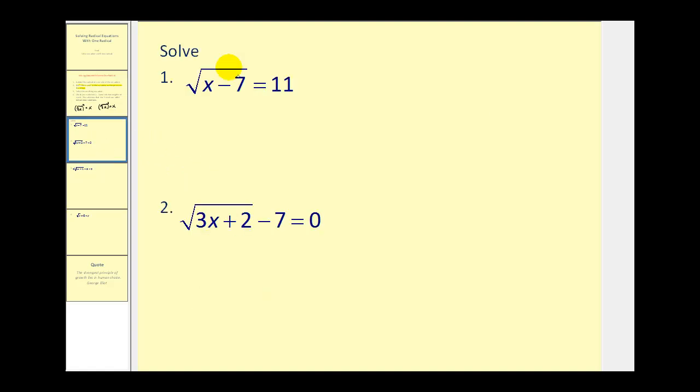Number one, the square root is already isolated. Remember the square root has an index of two, so we'll square both sides of the equation and then solve for x and check. If we square the square root of x minus seven, this will give us x minus seven which must equal 11 squared which is 121. Add seven to both sides, we have x equals 128.